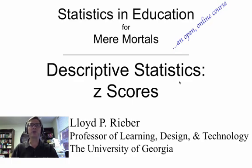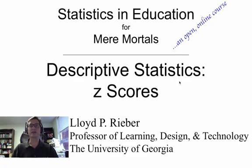Up to this point we've explored and considered some statistics that you have known well, such as the mean, and some that you have at least heard of or have had some familiarity with, such as the standard deviation. Now we are going to explore a statistic that may be completely new to many of you: the z-score, also known as a standard score. You will see just how incredibly useful z-scores can be and how easy they are to calculate. We are now beginning to really build on what we've learned so far, a pattern that will continue until the end of the course.